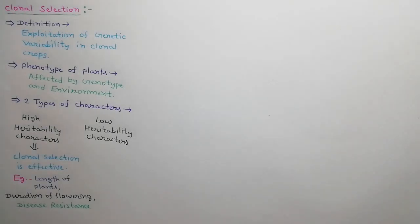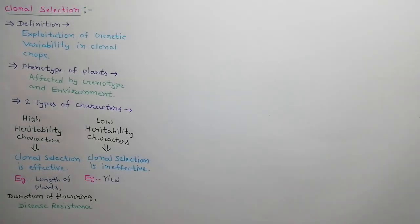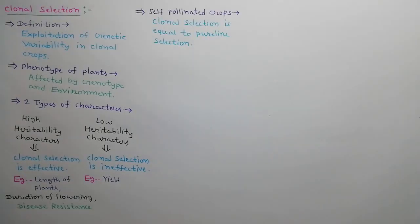Clonal selection is effective for high heritability characters, e.g. length of plant, duration of flowering, disease resistance, etc. While clonal selection is ineffective for low heritability characters, e.g. yield. In self-pollinated crops, the clonal selection is just similar to pure line selection.